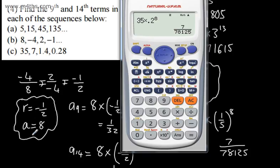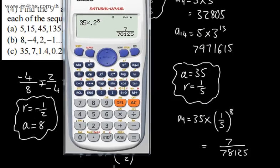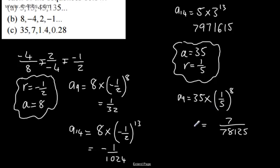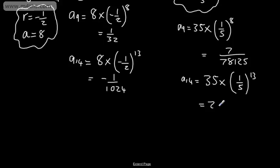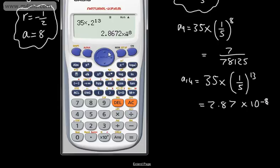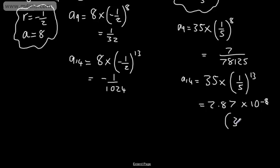So 35 times by 0.2 or 1 fifth to the eighth. Then for the 14th term, A14, all we're going to do is 35 times by 1 fifth or 0.2 to the power of 13. I think I'm going to have to write this in standard index form as it's too small a number. We get 2.87 times 10 to the negative 8 — so 2.87 times 10 to the negative 8, to three significant figures.